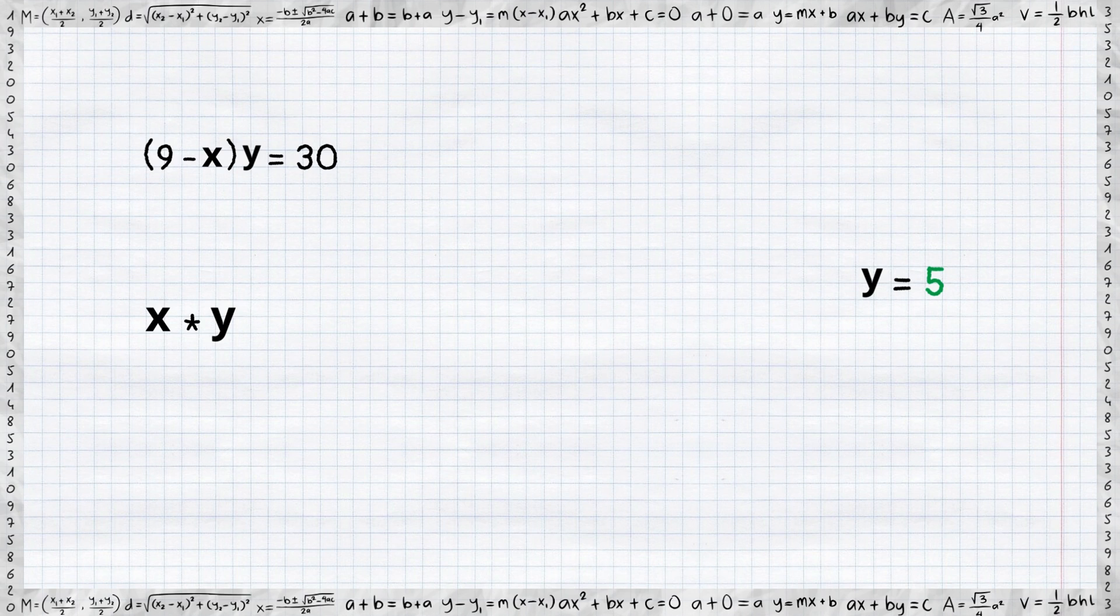Finally, let's get back to the first equation and substitute in for y and solve for x. The result x equals 9 minus 6, which is 3.